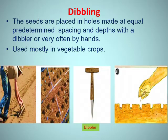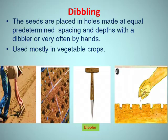Coming to the third method, that is dibbling. Dibbling is the process in which seeds are placed in holes made at equal predetermined spacing and depths with a dibbler, or very often by hands. It is used mostly in vegetable crops.